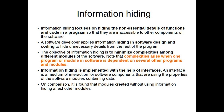Information hiding is implemented with the help of interfaces. An interface is a medium of interaction for software components using the properties of software modules containing data. The objective of information hiding is to minimize complexities among different modules of the software, especially when one module is dependent on several others.